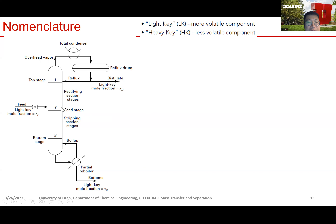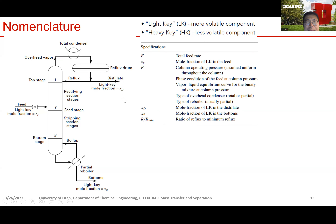Above the feed stage, from stage one to F including the total condenser, they are called the rectifying section. Below the feed stage, from stage F to stage N including the reboiler, they are called the stripping section. We'll talk about later why it's called rectifying and stripping. To analyze a distillation column problem, we need to know these conditions.